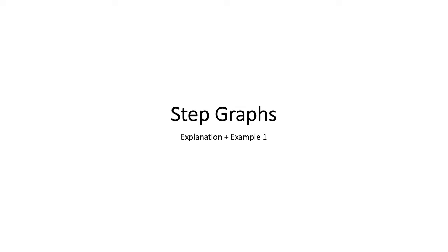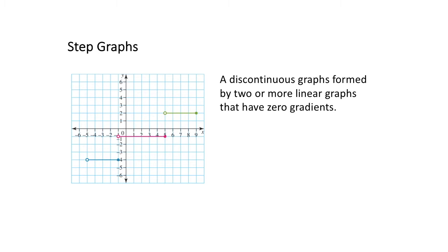This video is going to look at what a step graph is and then go through an example of how to construct one. A step graph is a graph that consists of discontinuous graphs formed by two or more linear equations that have a zero gradient. The first key point is that it is a discontinuous graph, meaning the lines do not intersect and do not join, as we can see with the three separate graphs in our example.